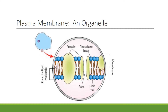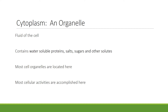The plasma membrane is composed of two layers of phospholipids and proteins. Here is a drawing showing the detail of the plasma membrane. You can see the phospholipid bilayer and the proteins that make up the cell membrane. The cytoplasm is an organelle. It is the fluid portion of the cell and it contains water-soluble proteins like salts, sugars, and other things.